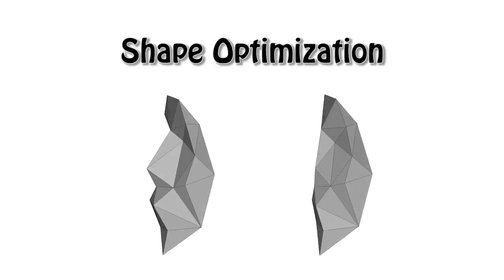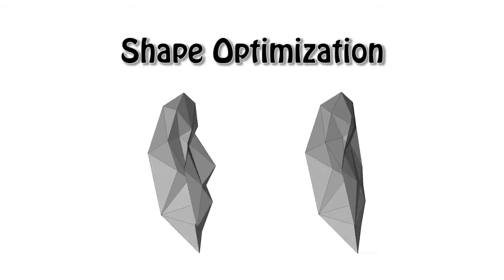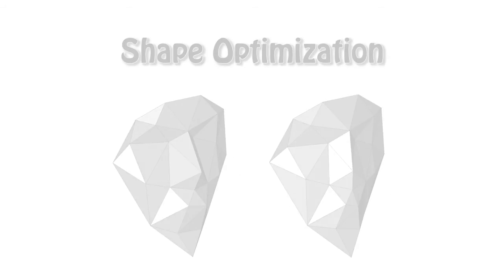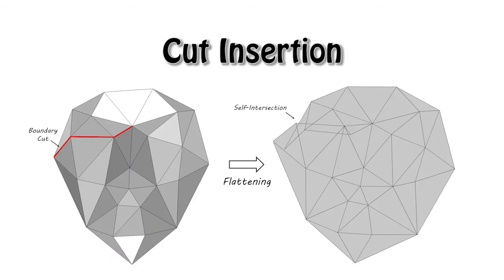However, if the approximation error is too high that cannot be accepted, cuts have to be inserted. How to cut is an important question. A random cut may relax the surface energy in a wrong way and result in self-intersection on the 2D pattern.